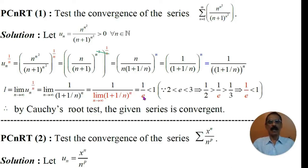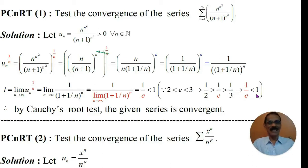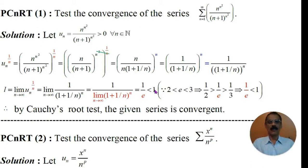What is the value of 1 by e? It is less than 1. Why less than 1? We know that the value of e lies between 2 and 3, that is 2 less than e less than 3. Taking the reciprocal, 1 by 2 is greater than 1 by e which is greater than 1 by 3. So the value of 1 by e lies between 1 by 3 and 1 by 2, and naturally 1 by 3 is less than 1. So the L value is less than 1. Hence, by the root test, the limit is less than 1 and therefore the given series is convergent.